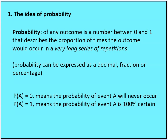Probability of event A equals zero means the probability of event A will never occur. Probability of event A equaling one means the probability of event A will occur with 100% certainty. So the probability of Hillary Clinton winning the 2016 election is zero, and the probability of Donald Trump winning the 2016 election is one.